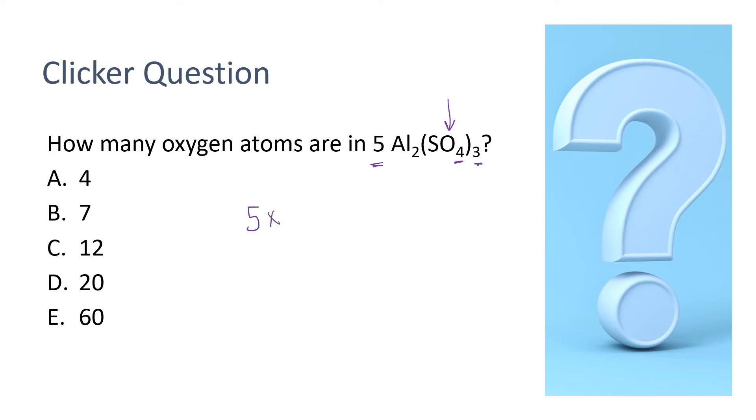We're going to take that coefficient out in front, multiply it times the subscript inside of the parentheses, and then multiply that by the subscript outside of the parentheses. 5 times 4 gives us 20. If we multiply that by 3, we end up with 60.